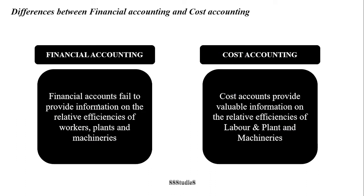The last difference is that financial accounts fail to provide information on the relative efficiencies of workers, plants, and machinery because financial accounts only consider rupee terms — you are only monitoring monetary transactions, so relative efficiencies are not analyzed. Whereas cost accounts provide valuable information on the relative efficiencies of labor, plant, and machinery, because cost accounts can be prepared not just in monetary terms but also in physical units, allowing efficiencies to be gauged — which is not possible in financial accounting.